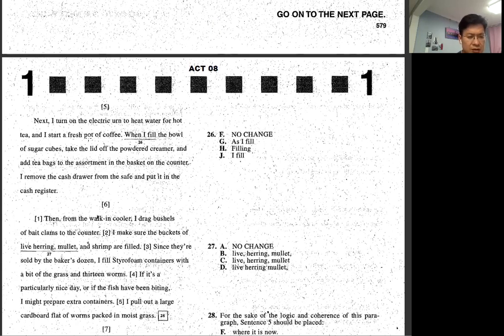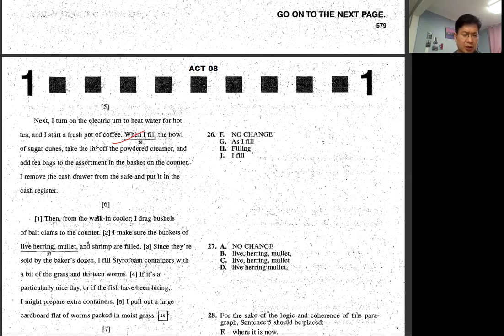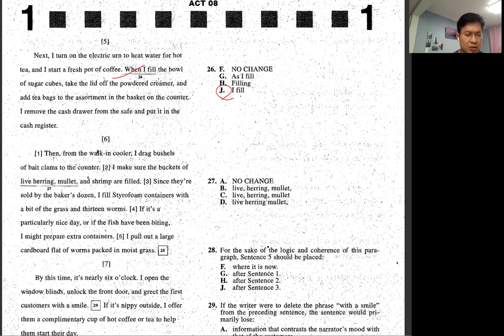Next I turn on electric, learn to heat water for hot tea and start fresh pot of coffee. When I fill. When I fill the bowl of this, take this, and add this. So when doesn't make sense because there's no following up with another domain clause. So because of that we have to take out the when. The later part is just listing up verb, verb, verb and verb. So we don't have after.